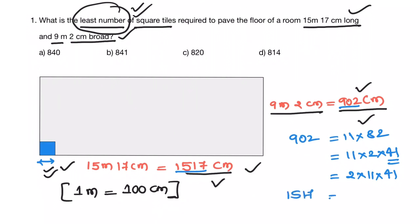Now 1517. 2 cannot be factor of 1517 because 1517 is odd number. 11 also cannot be the factor of 1517 because sum of the digits at odd places minus sum of the digits at even places is 7 plus 5 minus 1 plus 1, that is equal to 12 minus 2. This is 10. This is not divisible by 11. So this number is not divisible by 11.